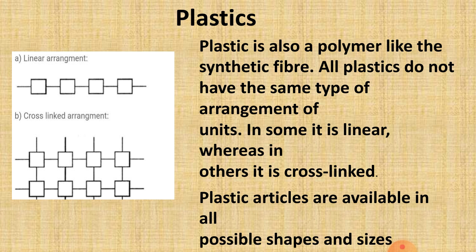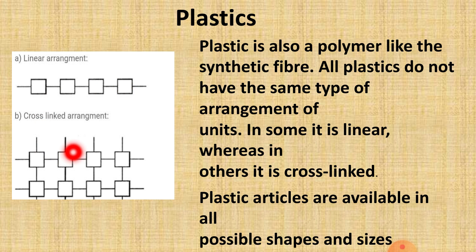Plastic articles are available in all possible shapes and sizes. Plastic is a polymer — 'poly' means many, 'mer' means part. In linear arrangement, there is a long continuous chain of carbon-carbon bonds. In cross-linked arrangement, chains are cross-linked and the material becomes more rigid.